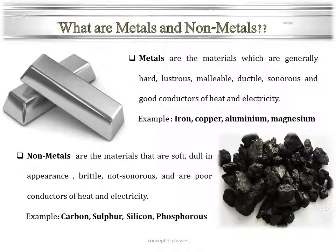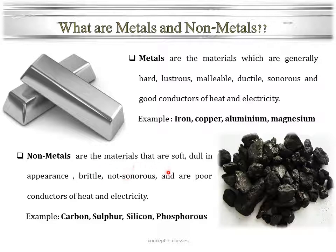Nonmetals are elements which do not exhibit these metallic characteristics. That is, nonmetals are materials which are soft, dull in appearance, brittle in nature, not sonorous, and are poor conductors of heat and electricity. Examples include carbon, sulphur, silicon, and phosphorus.